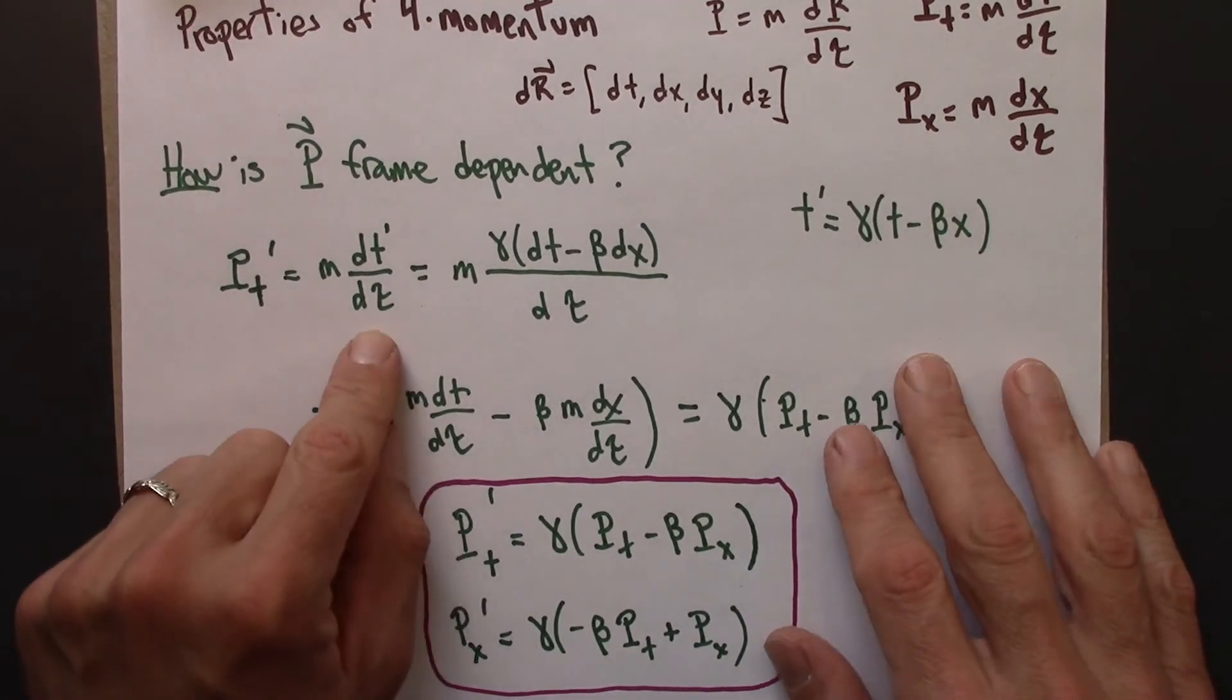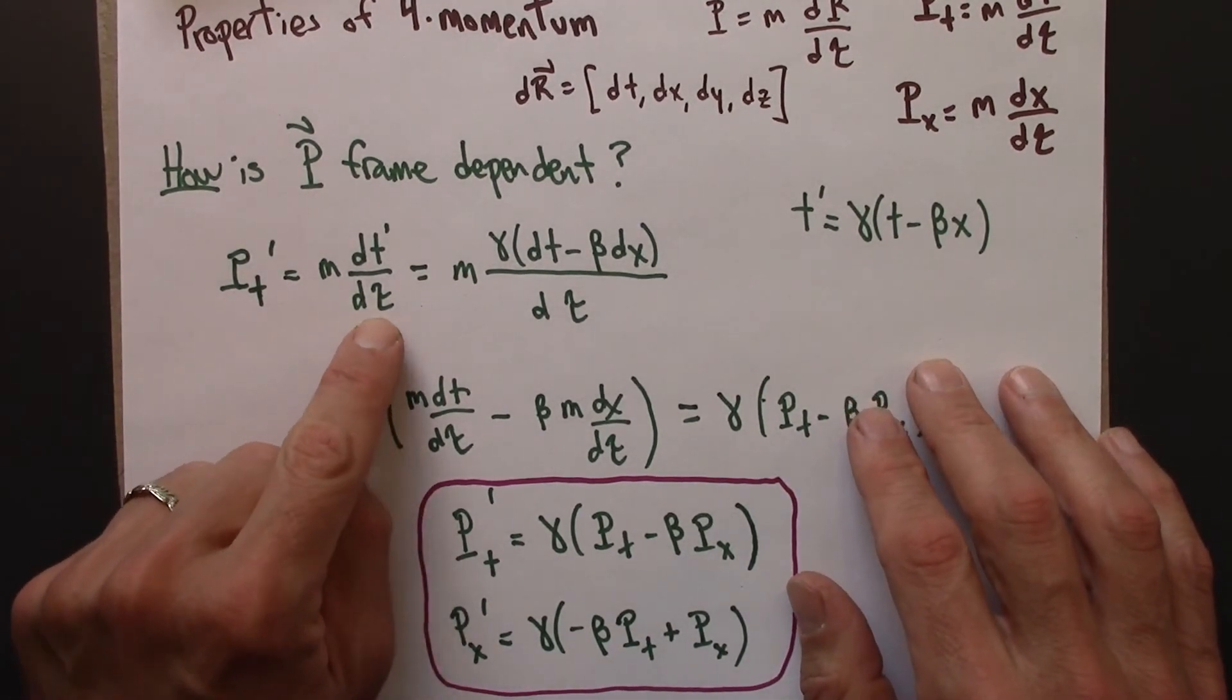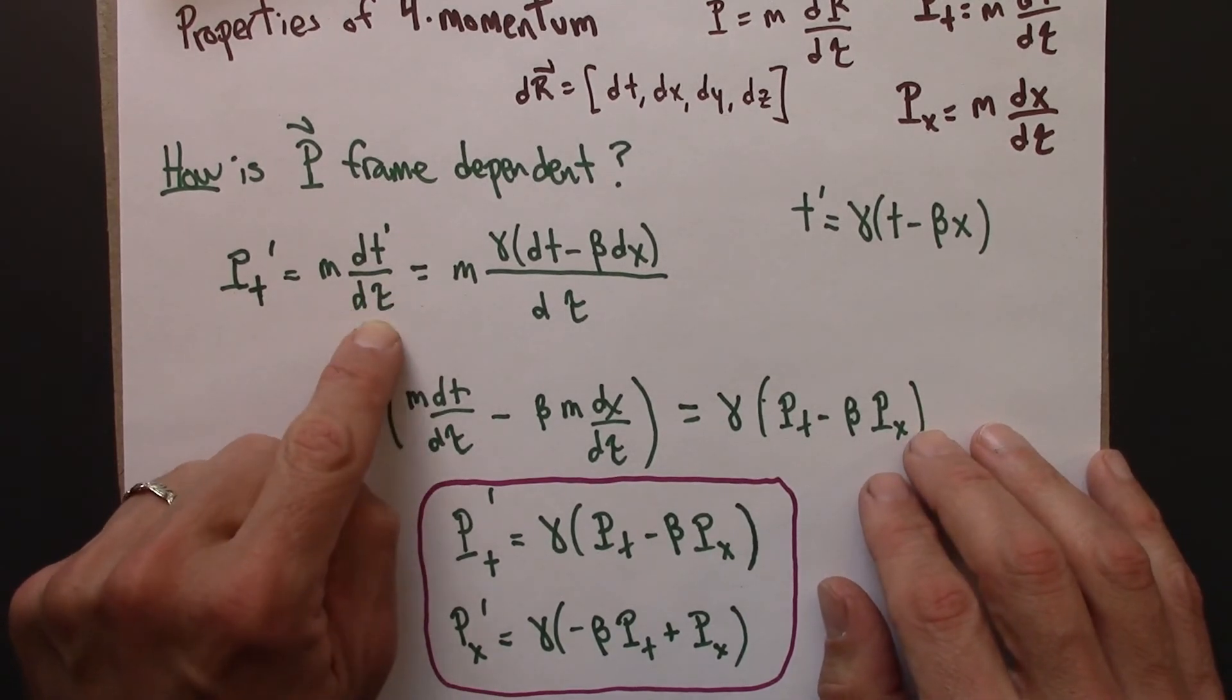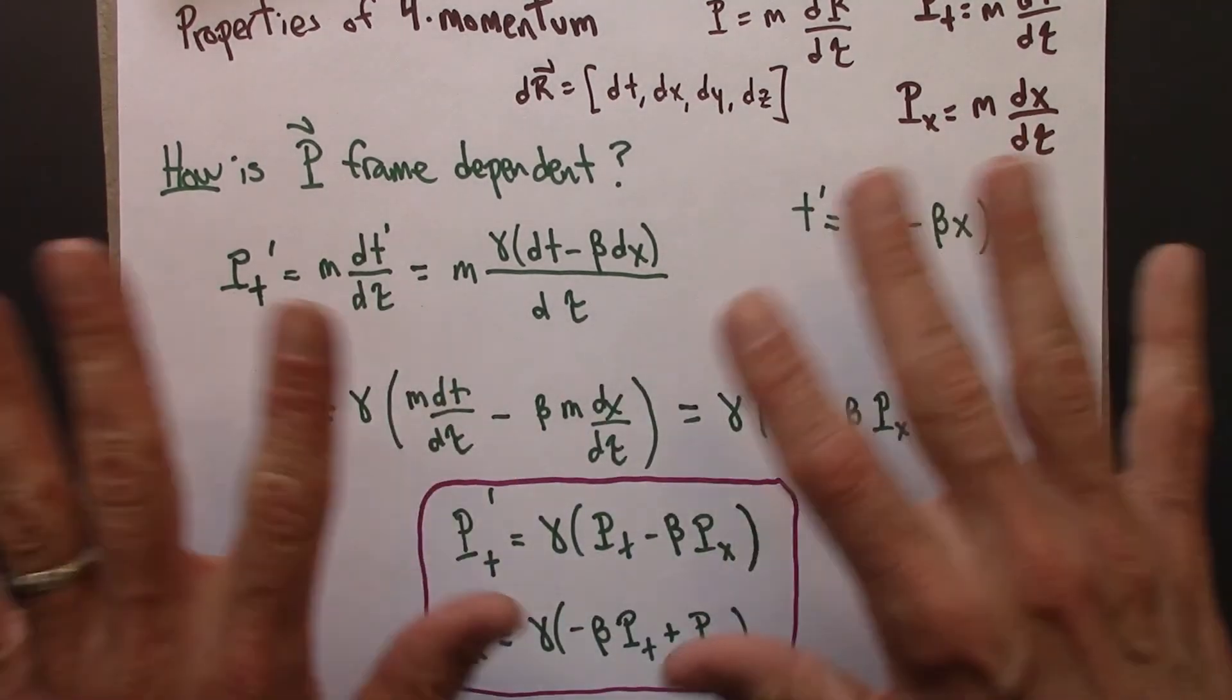And that's not shocking because we built the four momentum out of dx and dt. But notice, maybe one of the key things is that we have d tau here, which is frame independent. If this transformed as well as this, then things might get messed up.